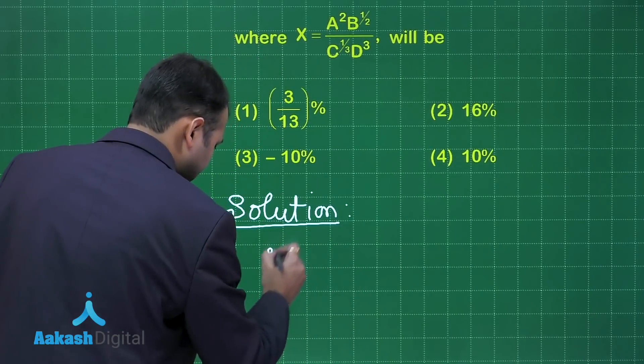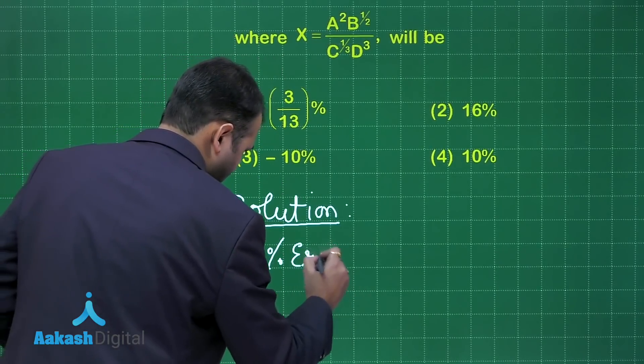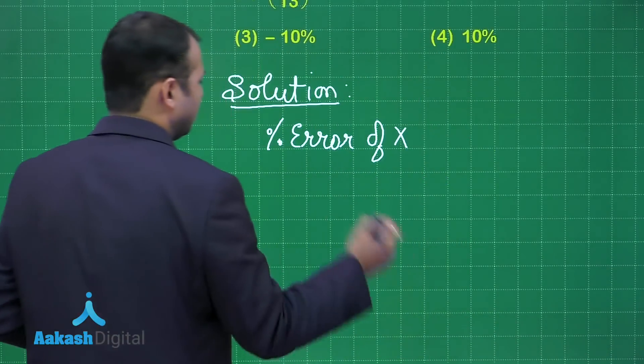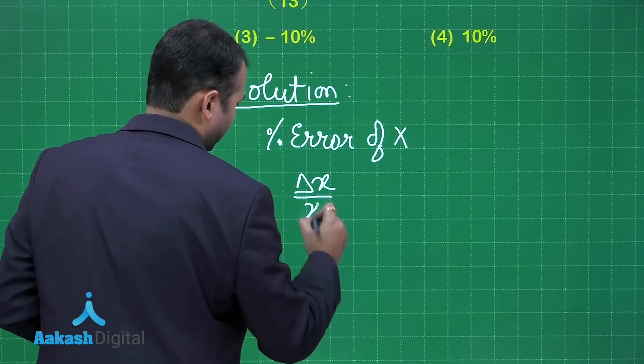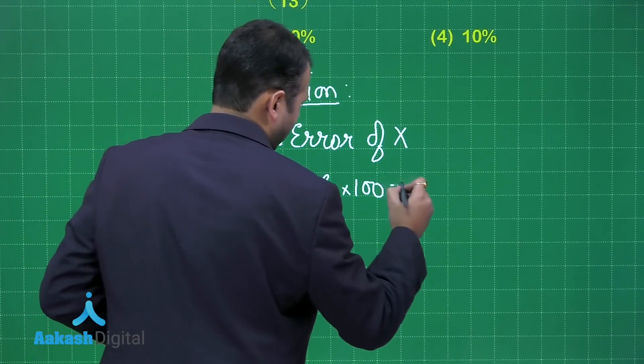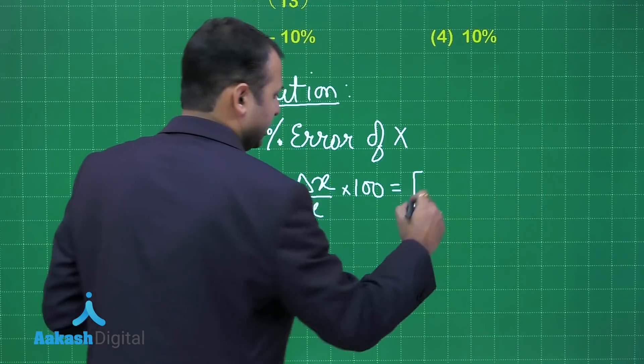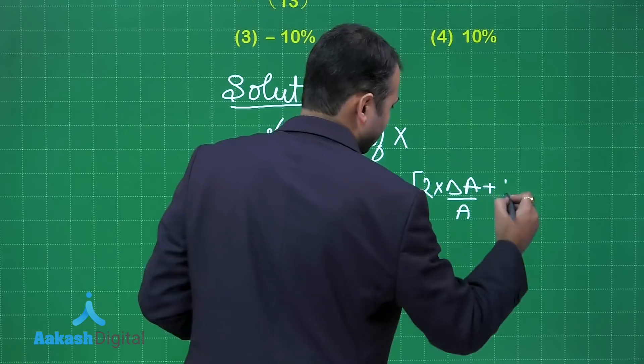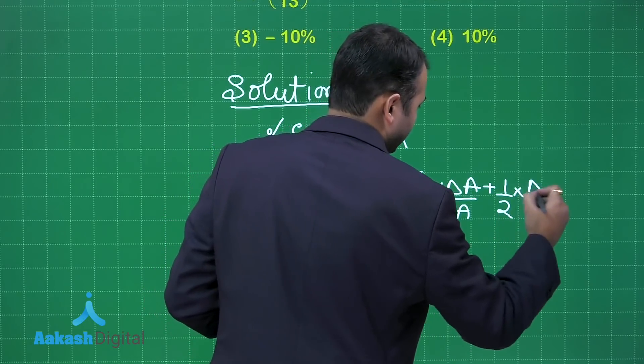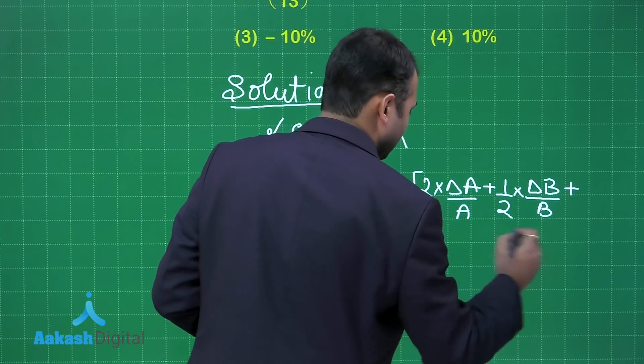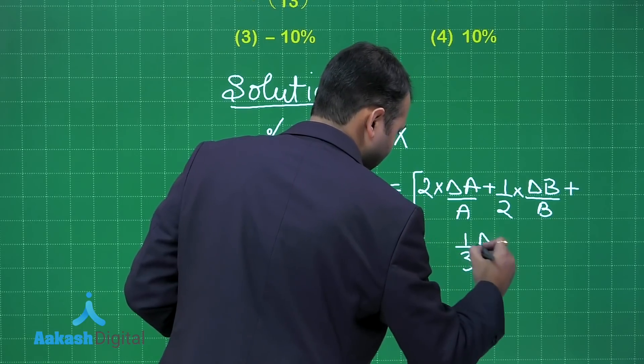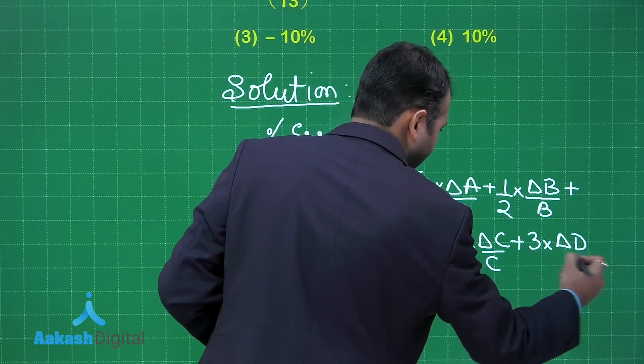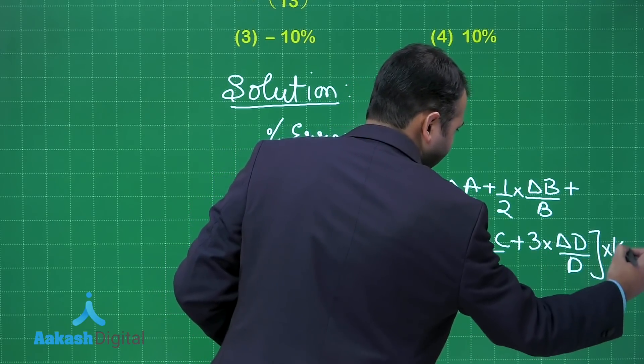So you will be writing percentage error of x can be given as delta x upon x into 100. That would be equals to - I will take 100 as a common later on - 2 into delta A by A plus half into delta B by B plus 1 by 3 delta C by C plus 3 into delta D by D, and all should be multiplied with 100.